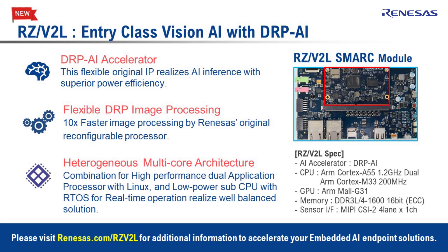RZV2L has a high-performance Cortex-A55 CPU for Linux and a low-power M33 sub-CPU for RTOS. Please visit renesas.com/rzv2l for additional information.